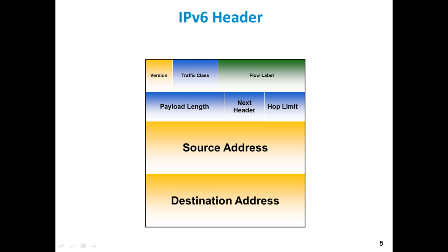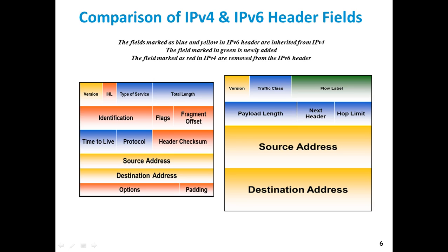Now this is a diagrammatic example of an IPv6 header. The fields are: version, traffic class, flow label, payload length, next header, hop limit, source address, and destination address. When you compare the IPv4 header with the IPv6 header, the fields shown in yellow and blue are retained but may be given a different name in IPv6. The green fields are newly added when compared to IPv4.